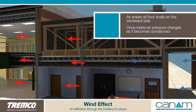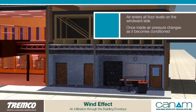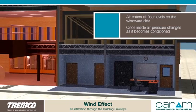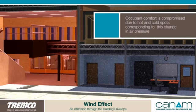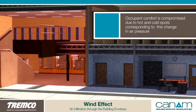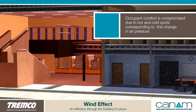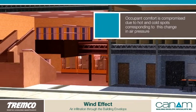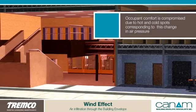In multi-story buildings, air enters all floor levels on the windward side, such as through soffits between floors. Once inside the building, air pressure changes as it becomes conditioned, compromising occupant comfort due to hot and cold spots corresponding to this change in air pressure.